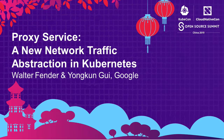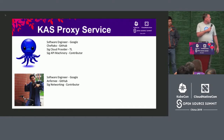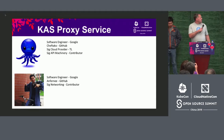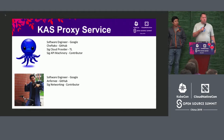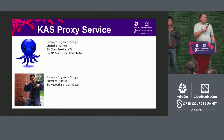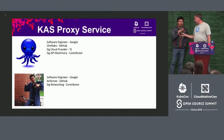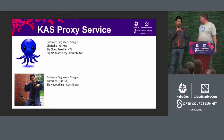The Kube API server proxy service. I'm an engineer at Google. My GitHub is Chef Taco, and I'm the SIG Cloud Provider TL. I'm also one of the principal contributors on SIG API Machinery. I'm a work colleague and also work at Google, mainly focused on networking.